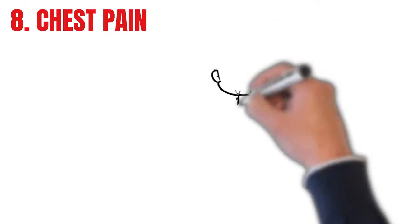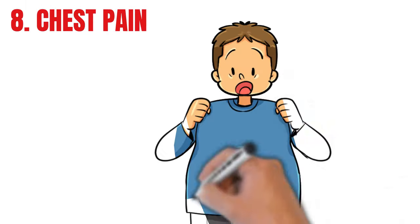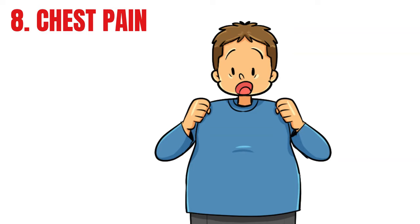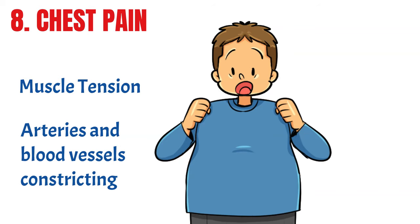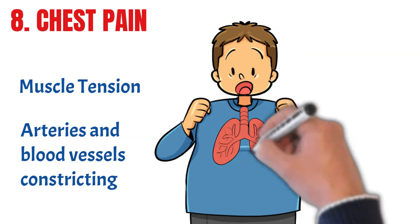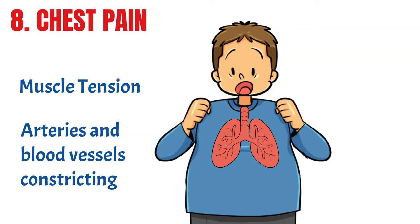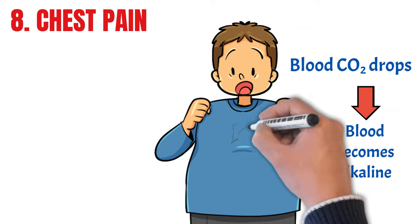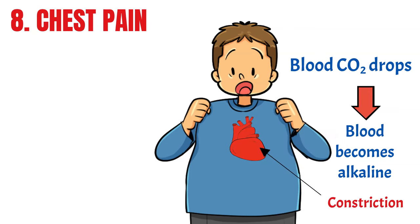Number eight. Chest pain or tightness in the chest is another subject I've made a whole video about. But the two most common causes are muscle tension and the arteries or blood vessels in the heart constricting. And why does this happen? Because, as mentioned, hyperventilation causes blood carbon dioxide levels to drop, which makes the blood more alkaline, which in turn causes constriction of the arteries and blood vessels. Although this can be quite painful, it is not dangerous for most people.